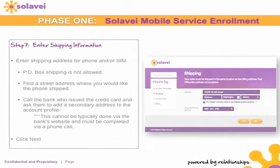Step seven is to enter your shipping information. Please remember that P.O. box shipping is not allowed. You will want to find a street address where you would like the phone or SIM card to be shipped. You can call the bank that issued your credit card and ask them to add a secondary address to the account profile, as this usually cannot be done over the website.